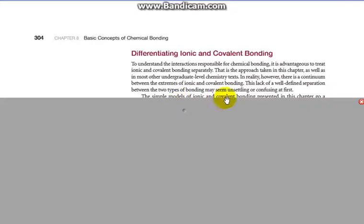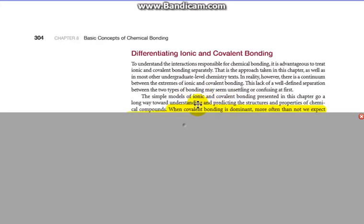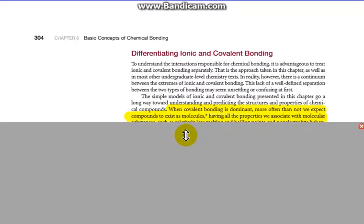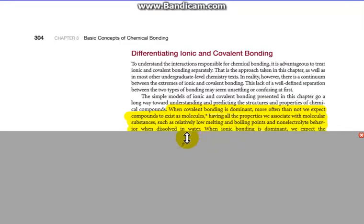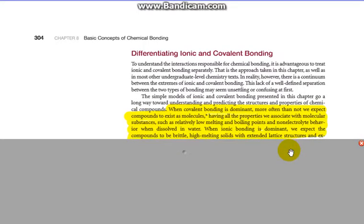The simple models of ionic and covalent bonding presented in this chapter go a long way to understanding and predicting structures and properties of chemical compounds. When covalent bonding is dominant, more often than not we expect compounds to exist as molecules, sharing electrons, having all the properties we associate with molecular substances such as relatively low melting and boiling points. Make sure you highlight that. And non-electrolyte behavior when dissolved in water.